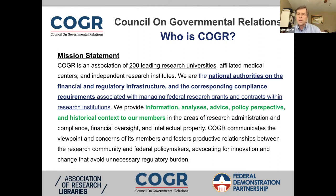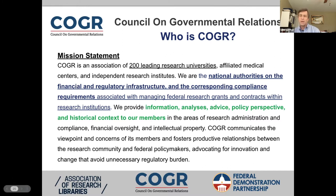COGR is a group of about 200 leading research universities. COGR considers itself the national leader in this space with regard to advocacy around different regulatory issues. They spend a lot of time doing analyses, developing position papers, and interacting with federal partners. They also work closely with FDP, AAU, and APLU.